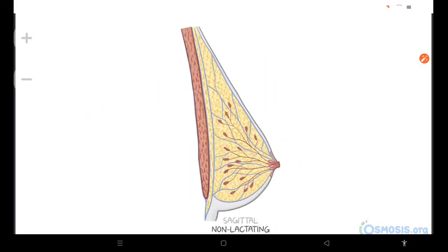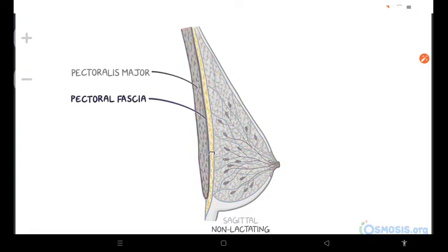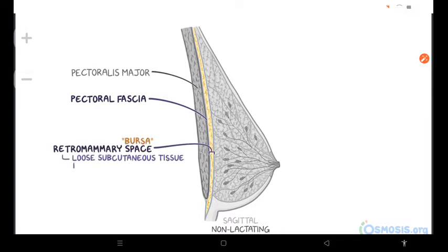Now let's take a look at the sagittal section of the female breast. As you can see, there's a fine space between the breast and the pectoral fascia. This is called the retromammary space, or bursa, which is a loose subcutaneous tissue plane. This plane contains a small amount of fat, which allows the breast to move a bit on the pectoral fascia.